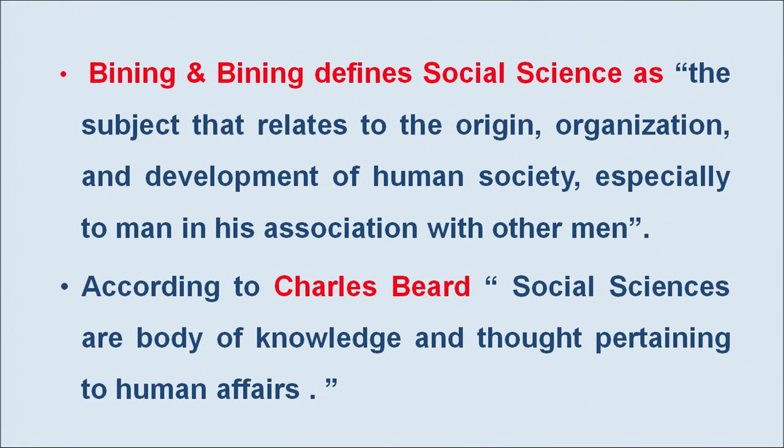Now the question arises, what is social science? Social science is an integral part of school curriculum at all stages of school education. It is a subject of study which offers a systematic study of man in relation to his society. In other words, social science is a generic term covering scientific study of man. Banning and Banning defines social science as the subject that relates to the origin, organization and development of human society, especially to man in his association with other men. According to Charles Baird, social sciences are a body of knowledge and thought pertaining to human affairs. In a general way, any branch of knowledge that deals with social life of man and employs scientific methods for its study may be conceived as social science.